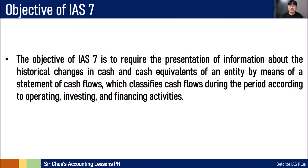The objective of IAS-7 is to require the presentation of information about the historical changes in cash and cash equivalents of an entity by means of a statement of cash flows, which classifies cash flows during the period according to operating activities, investing activities, and financing activities. The statement of cash flows is separately discussed in a separate standard — it's not included in IAS-1 Presentation of Financial Statements.